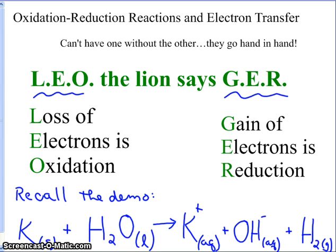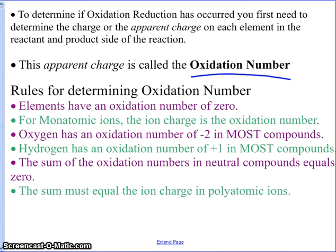So how do we look at the balanced equation that shows the demo we did the other day, where we put potassium metal into water? How do we decide which element gained electrons and which element lost electrons? In order to accomplish this, we have to figure out what a substance's oxidation number is. For each compound, element, or ion, we're going to assign an oxidation number for every single element in a reaction. There are six rules to remember, and most of them are pretty easy — you already know them.